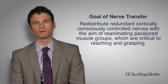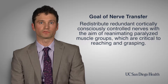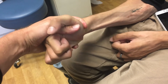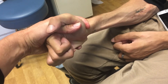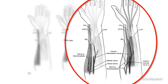The basic goal of nerve transfer is to redistribute redundant, cortically and consciously controlled nerves with the aim of reanimating paralysed muscle groups, predominantly those which are critical to reaching and grasping in cervical spinal cord injury patients. In this image on the right side we see the functionally redundant but cortically well controlled brachioradialis axons being transferred, donated, to the preserved neural tubes of the anterior interosseous nerve, aiming to restore finger and thumb flexion.